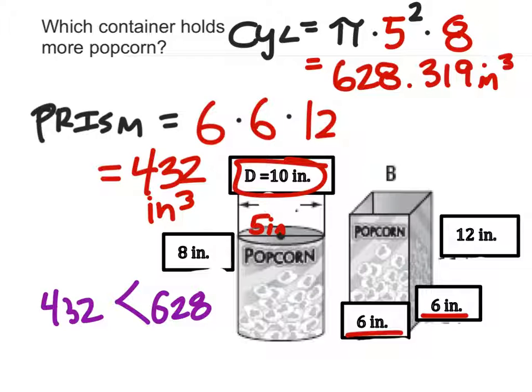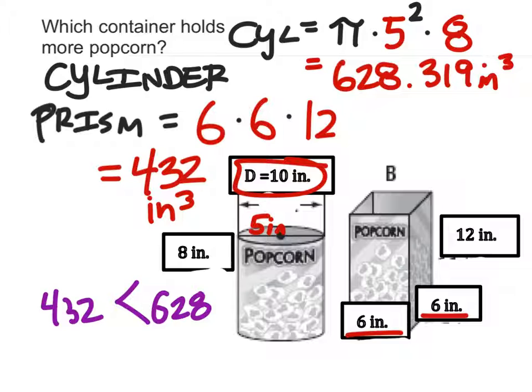So which popcorn container holds more? The cylinder. Do they have that labeled as container A? Yeah, okay. You could just write cylinder if you want or container A. Either one of those would work.